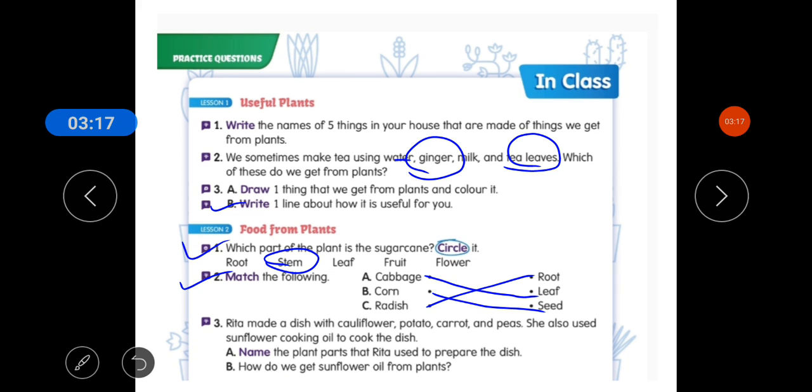For dish prepare, she has used the plant parts. You have to write the name of cauliflower. So you have to write the cauliflower. Yes, this is flower. Potato, potato is stem. Carrot is root and peas are seeds. Clear?